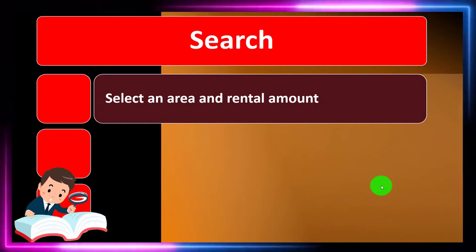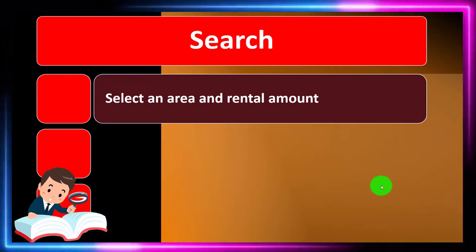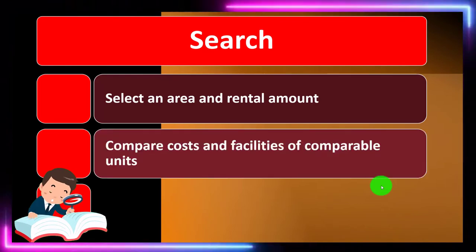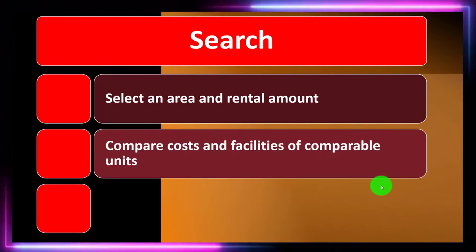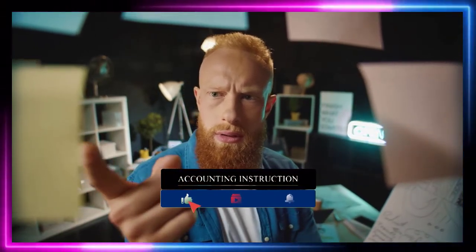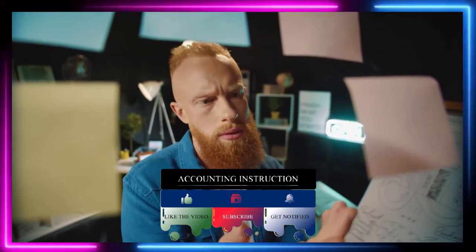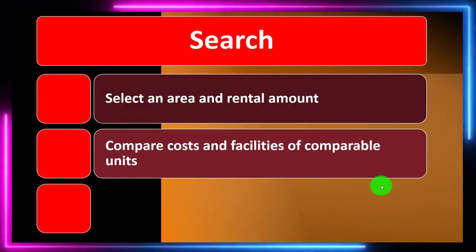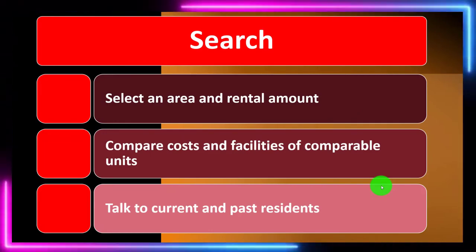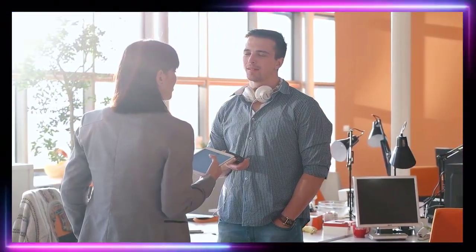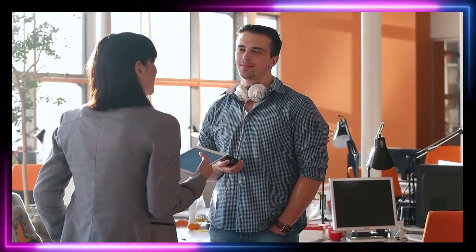When searching for a rental, select an area and rental amount range. You can typically consider the size and location of the place to get a decent idea of the price. Compare costs and facilities of comparable units — a lot of this can now be done more easily online with side-by-side comparison tools. Once you've narrowed it down, you should still go take a physical look at the locations.